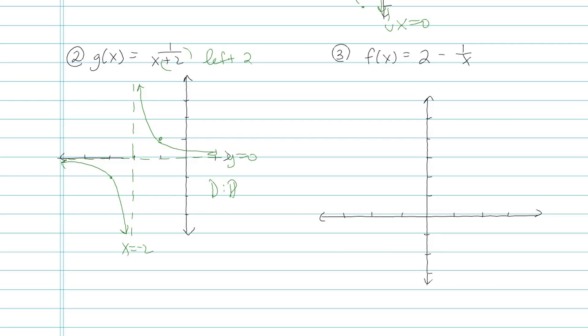Okay, domain now is all reals except for the excluded x value is here at negative 2. And then the range, all real numbers, y could not be equal to 0. Okay, now this last one is something that I'm going to rewrite.